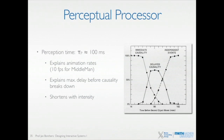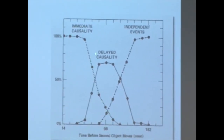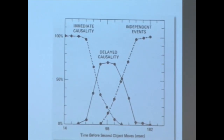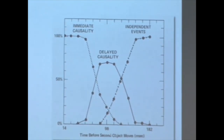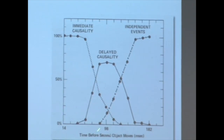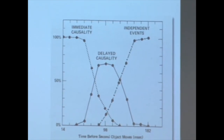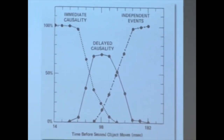There wasn't a difference between the first two, but the third one had a delay of 100 milliseconds. Most of you said this does not belong together — there is a little delay in between. If you do this with more people over more time, you get a curve where at 100 milliseconds, not many people say the one ball is immediately causing the reaction. They still think they have something to do with each other — the first one comes in, waits, and then the second moves on.